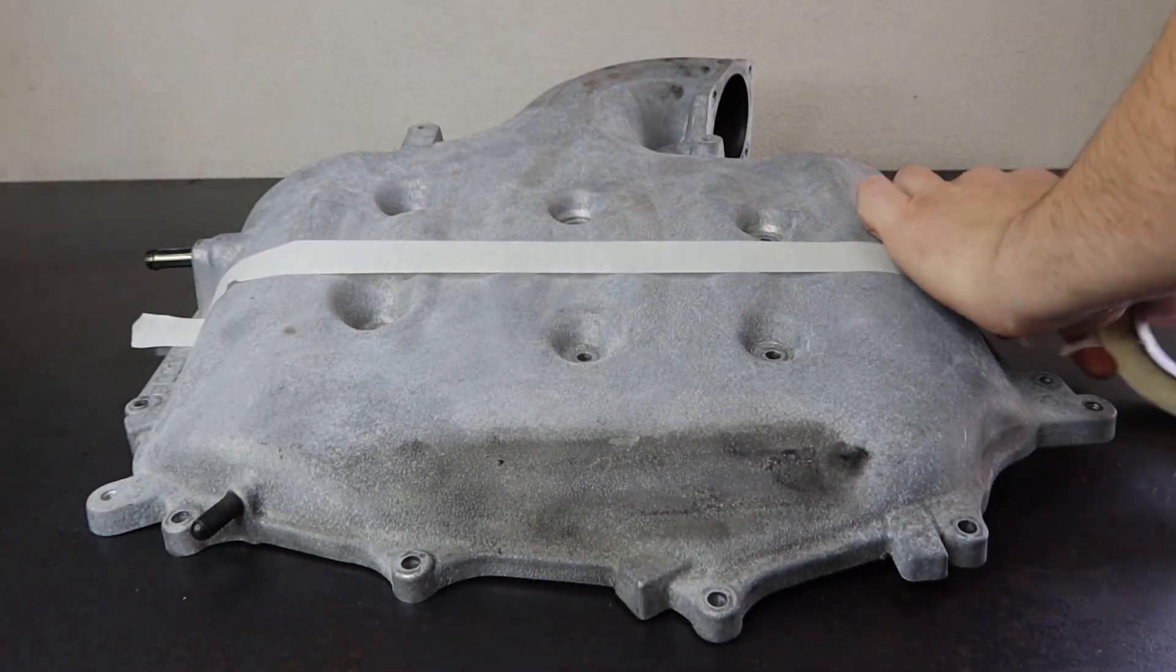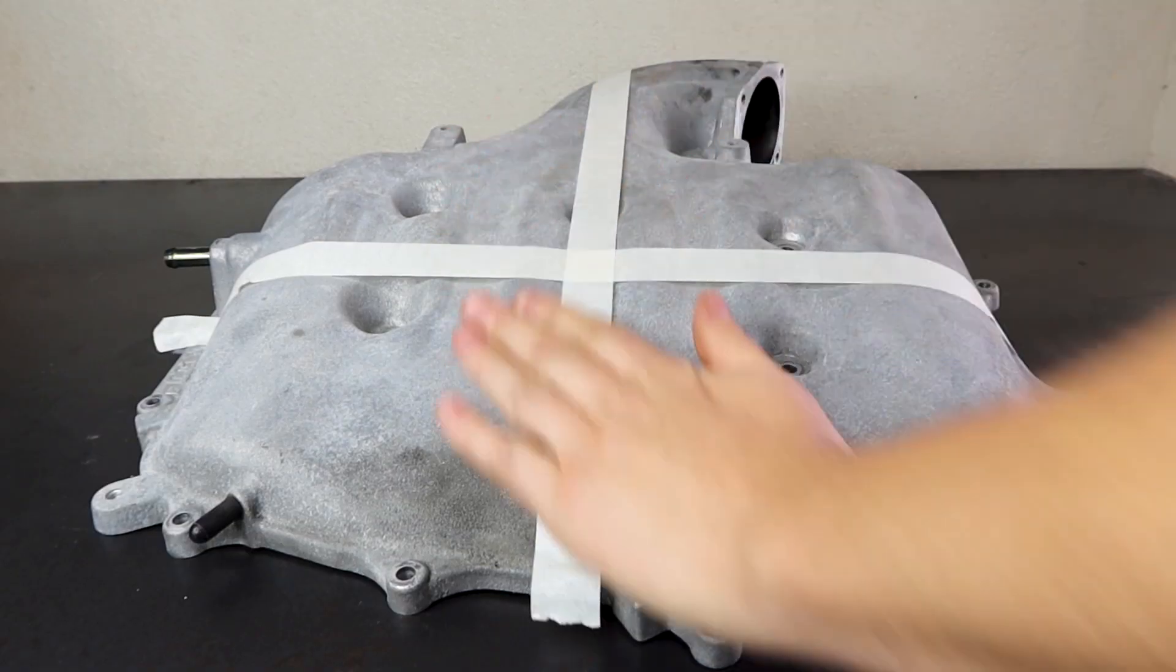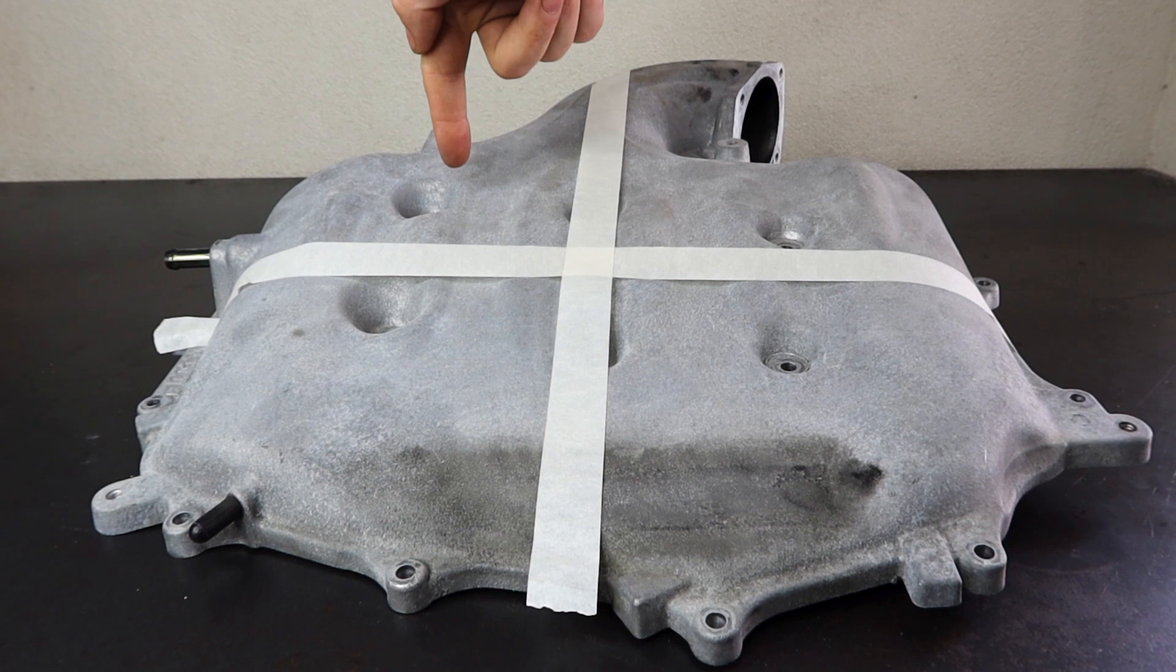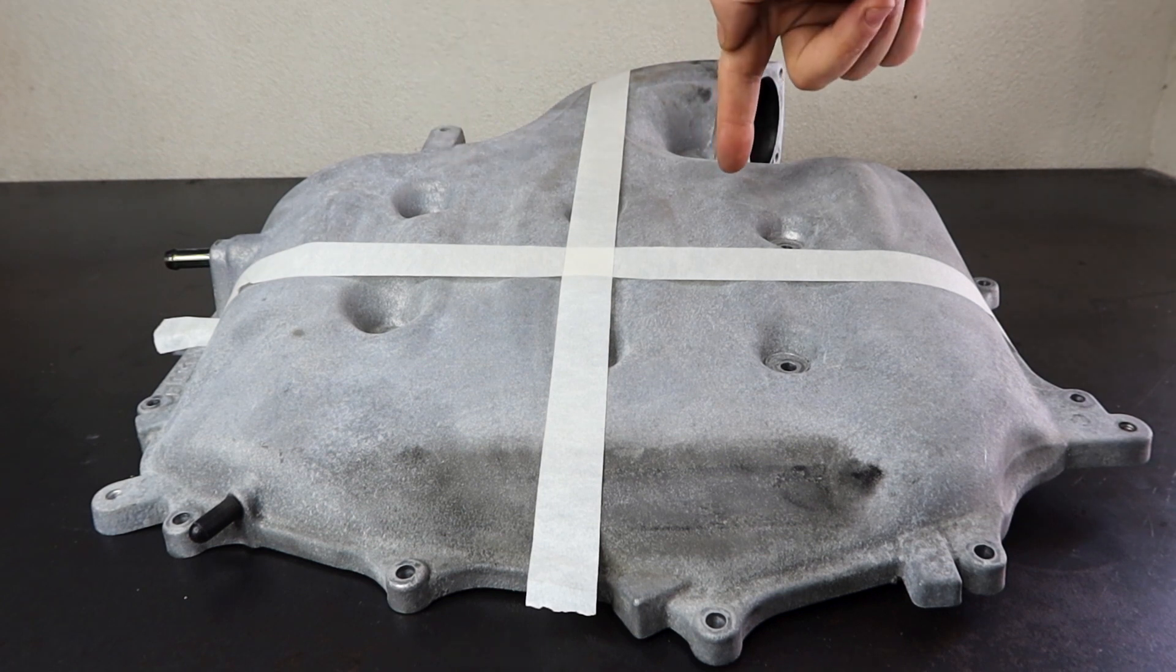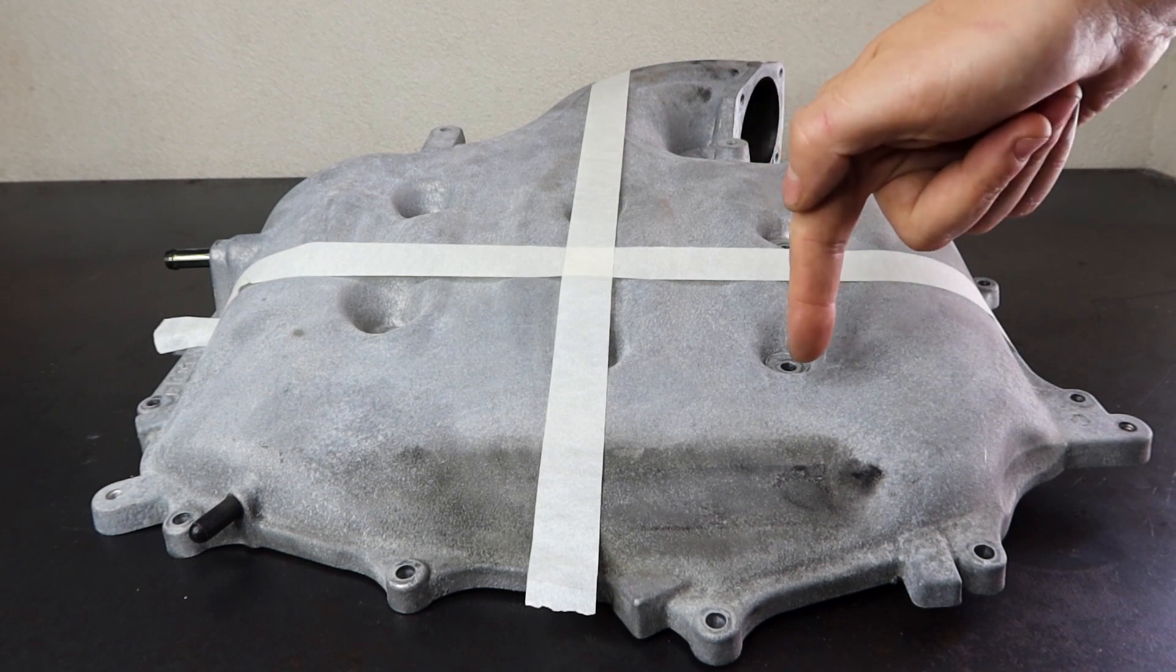Just marking this out now into four quadrants so we can test out the two different soda blasters and the two different types of media. Top left will be the commercial blaster and the commercial soda followed by my blaster and the commercial soda, commercial blaster and the bicarb, and my blaster and the bicarb.